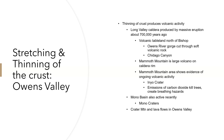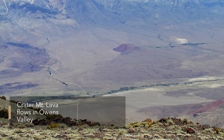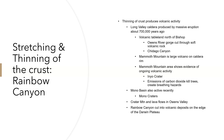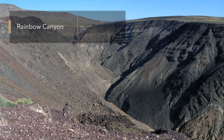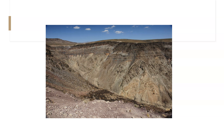Crater Mountain and its lava flows are found in Owens Valley — mostly in low areas with the one crater mountain rising above. Rainbow Canyon has cut into volcanic deposits on the edge of the Darwin Plateau. You can see the layers of volcanic deposits there, and because it's a canyon, material is being lost from the sides through rock falls and rock avalanches. You can see why it's called Rainbow Canyon from all the different colors in the deposits.